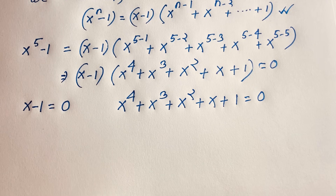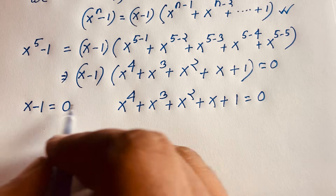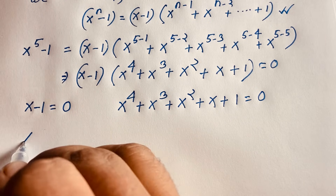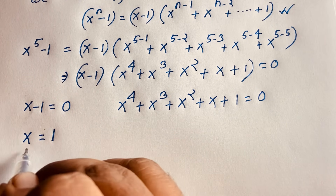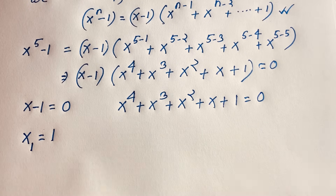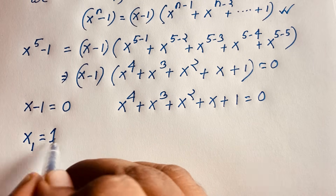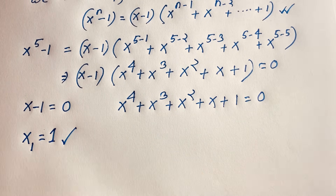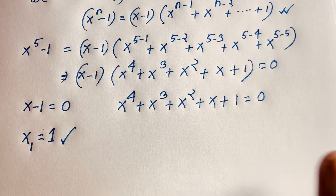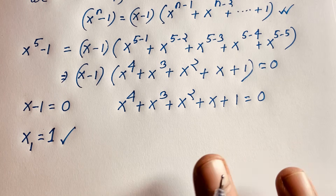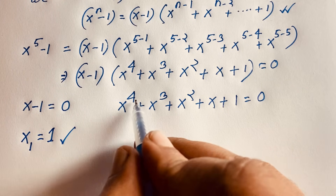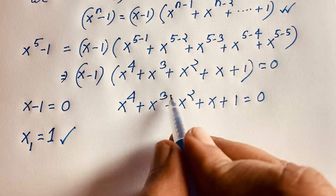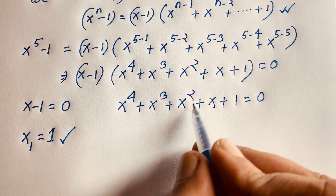For the first case, x minus 1 equals 0, so x equals 1. This is our first answer, x₁ equals 1. Now we need to find the remaining 4 roots from x to the power 4 plus x cubed plus x squared plus x plus 1 equals 0.